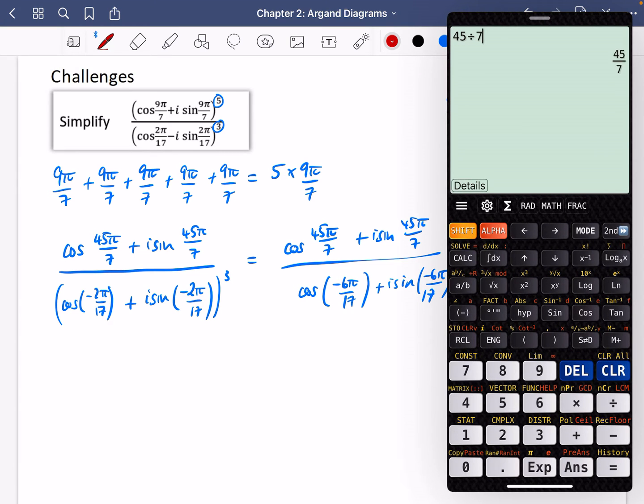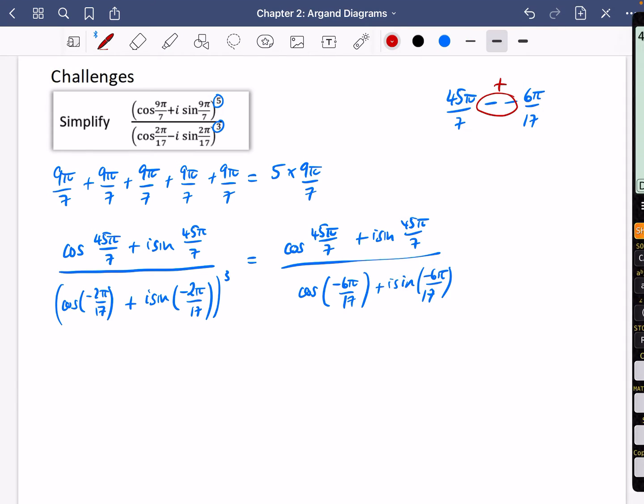So let's do this on here. We're going to do 45 over seven plus, and this is not going to be nice, I don't think, six over 17. And we have 807 over 119. How unpleasant. So we've got 807 over 119 pi, plus i sine 807 over 119 pi. Not very pleasant at all.